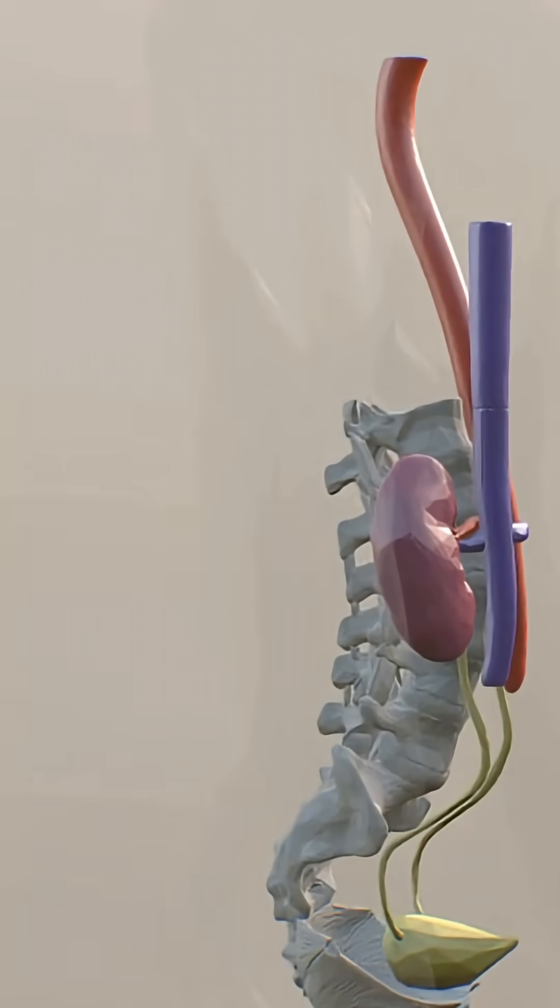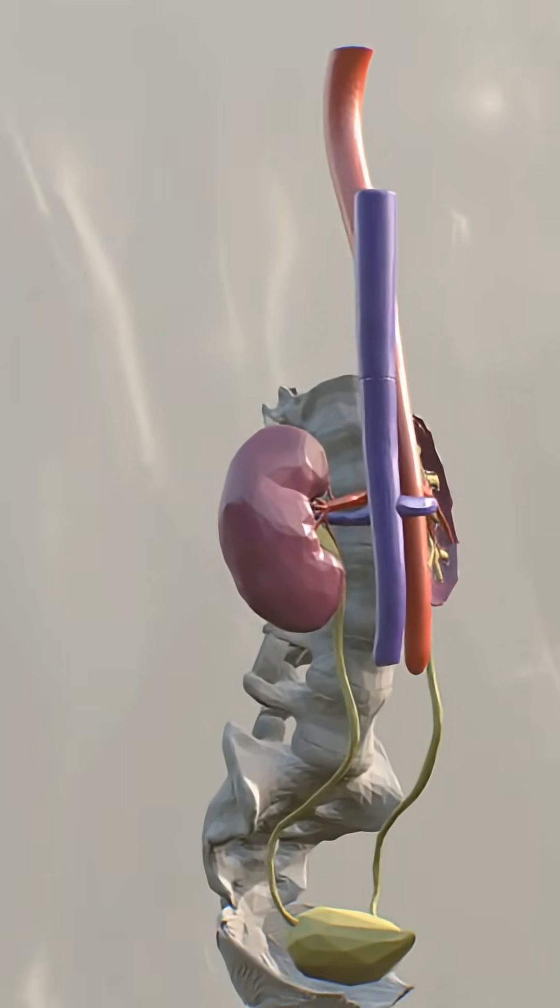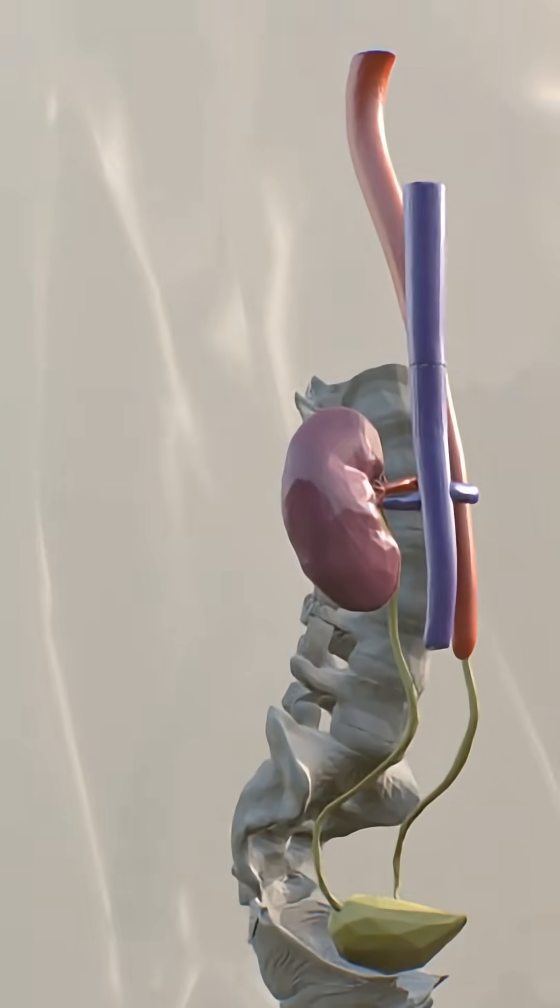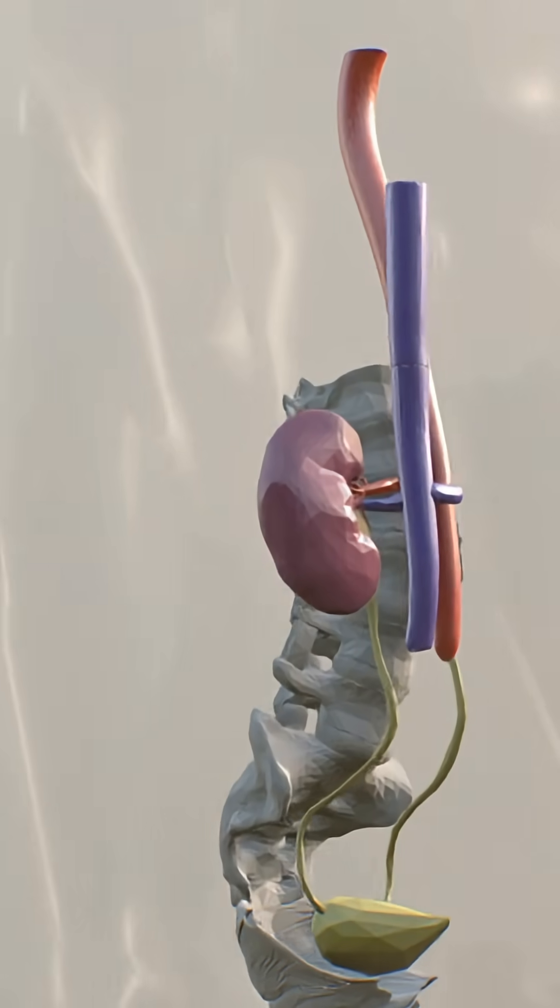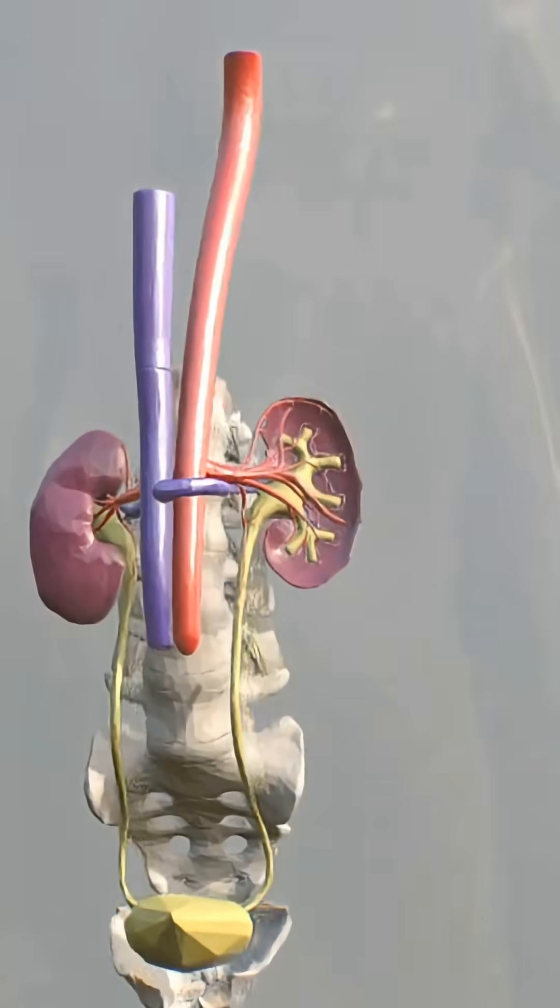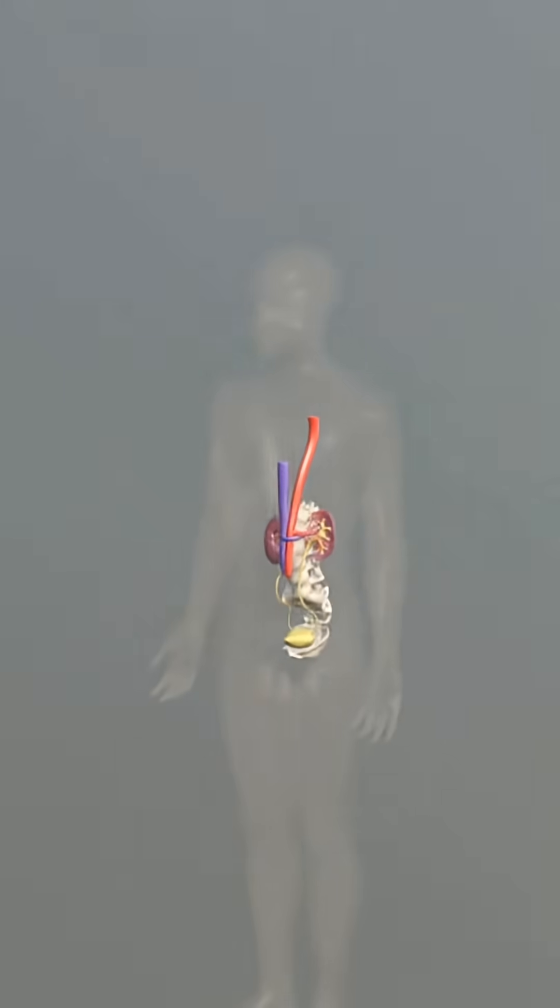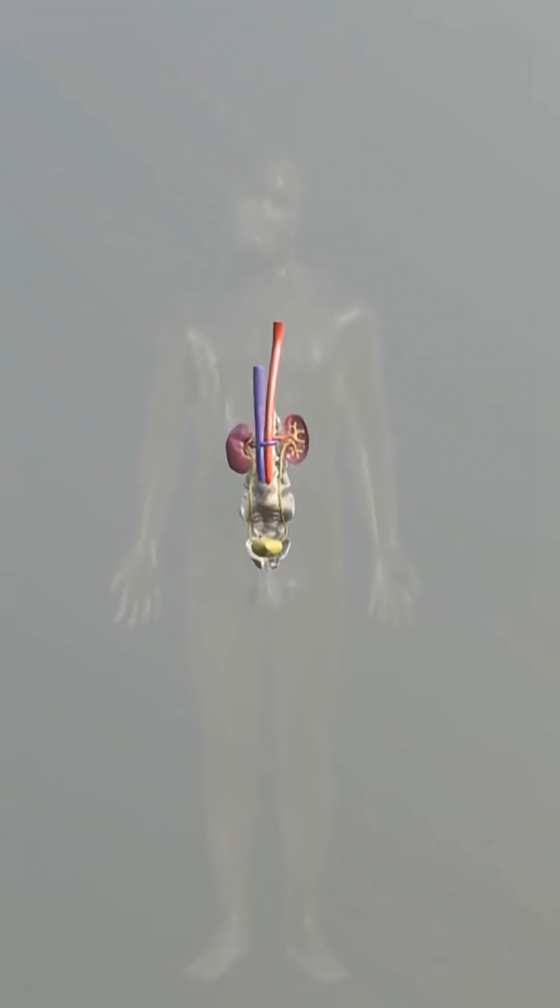In a single day, your kidneys filter around 150 quarts of blood, meticulously balancing your electrolytes, controlling your blood pressure and regulating red blood cell production. They are a sophisticated chemical processing plant operating 24-7 to keep you alive.